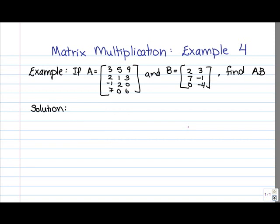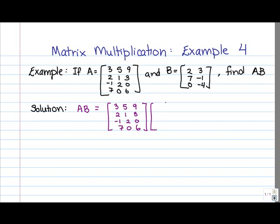So let's go ahead and have a look at the solution. What we want to find is matrix AB, and of course order of multiplication does matter. So what we have is matrix A times matrix B. We're expecting a 4 by 2 matrix.